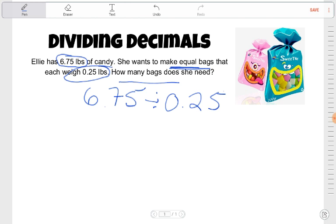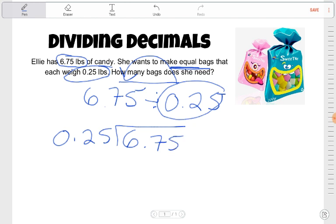So now we're seeing how many groups of this are going to go into that. 0.25, that is our divisor, that's going to go outside of the house. And 6.75, that's our dividend, that goes inside the house.